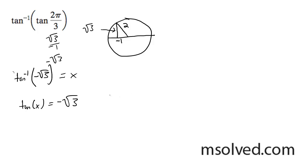is your bounds for the inverse tangent, which are going to be negative π over 2 to π over 2.